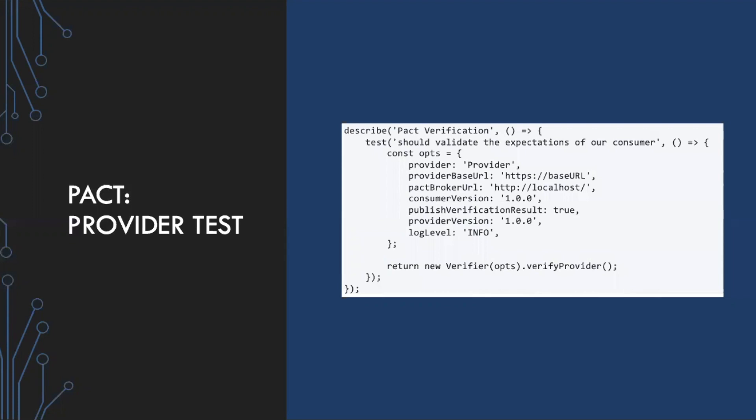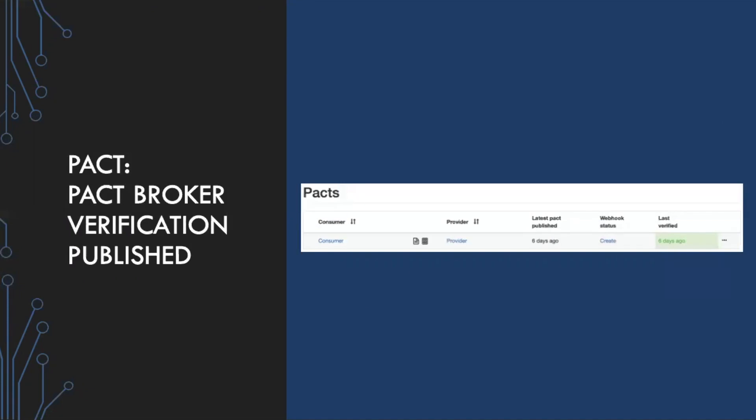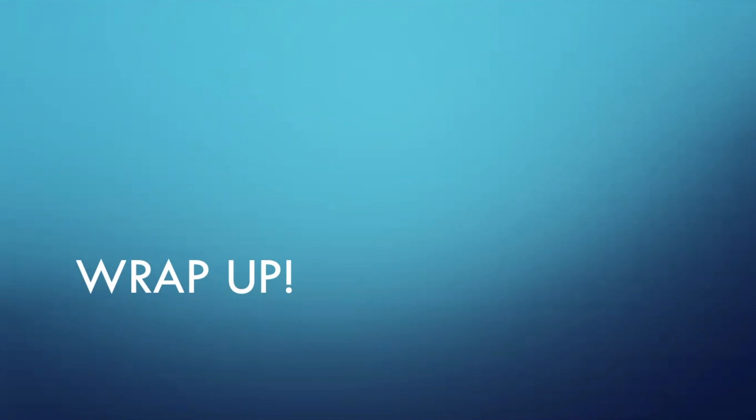Once all options are set up for our provider test, we run the verifier and pass those options to it. After the results have been published back to the PACT broker, this is an example of what the PACT broker would look like — in this scenario, we have a verified consumer contract that's been verified by the provider. The main benefit of contract testing is that you can save a lot of time and effort, getting fast and reliable tests compared to integration tests that may take a lot of effort to set up and be overall flaky and slow.